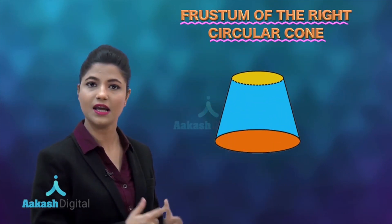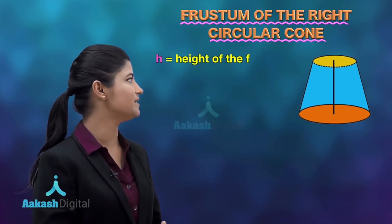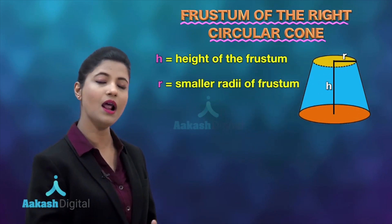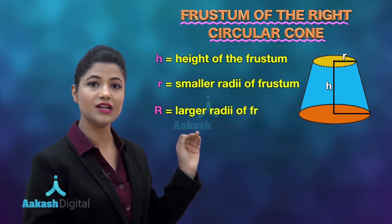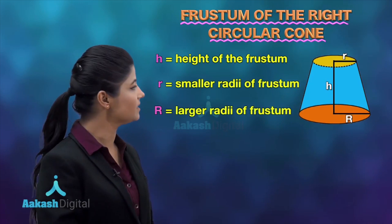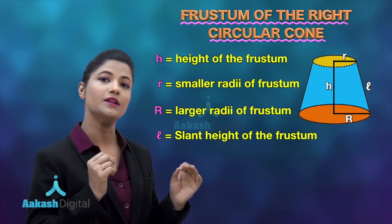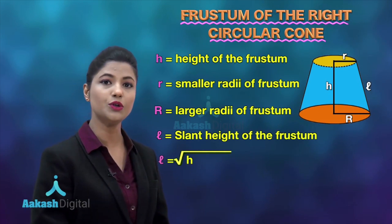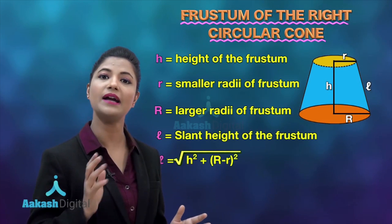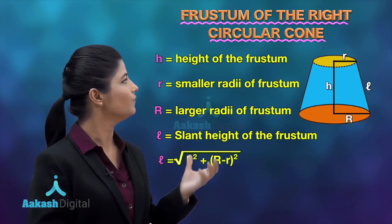Now let's see how you can obtain the surface area and volume of this frustum. The height of the frustum is h, the smaller radius is r, the larger radius is R, and its slant height is l, where l is equal to the square root of h squared plus (R minus r) whole squared.